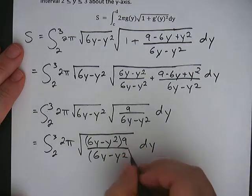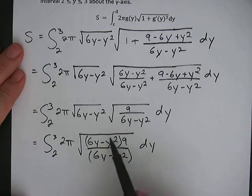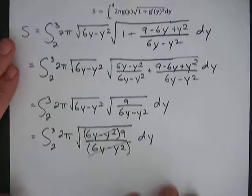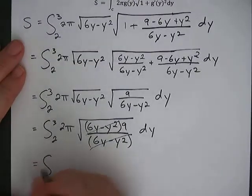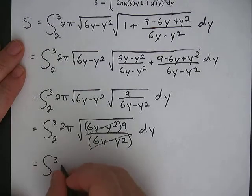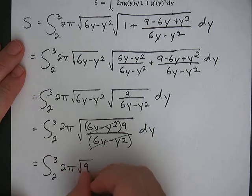Put a parentheses around this if we want. So you notice that the top and the bottom have the same term, so we can reduce that. It's left with just a 9 there. So we have the integral from 2 to 3 of 2 pi square root of 9 dy,